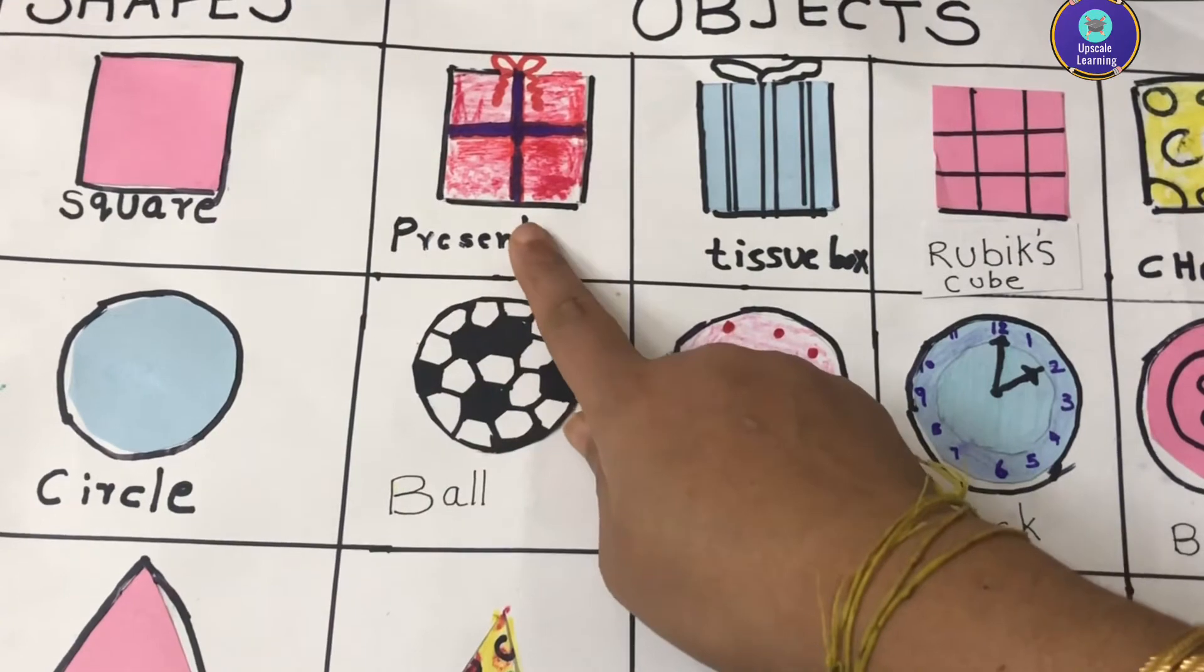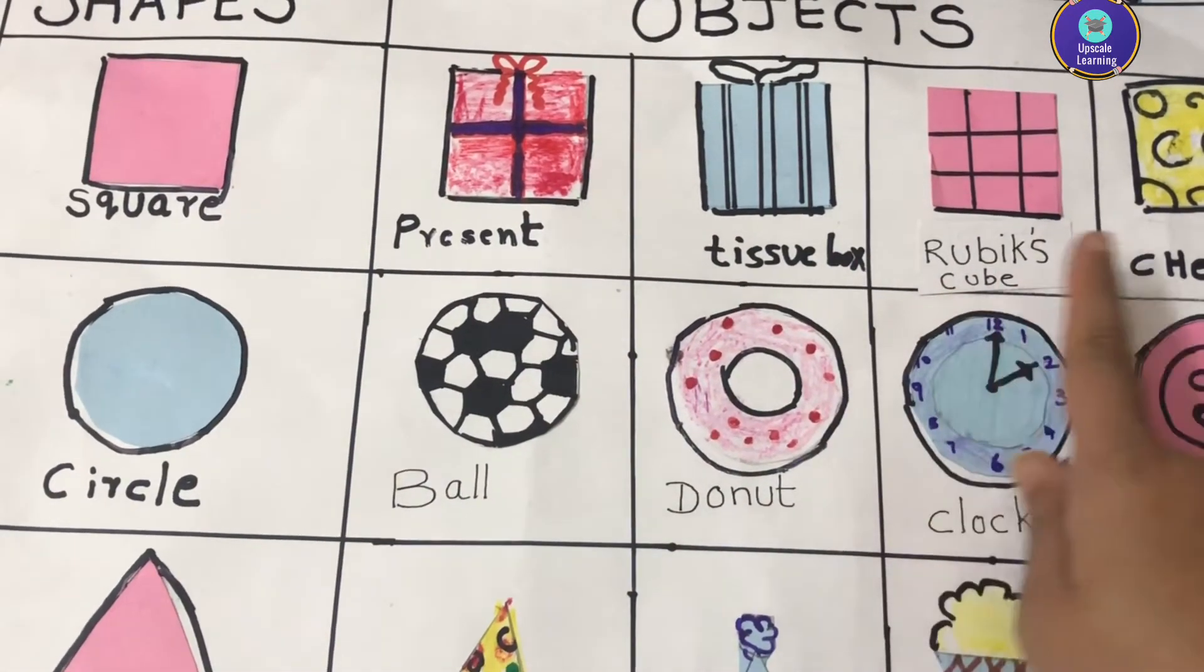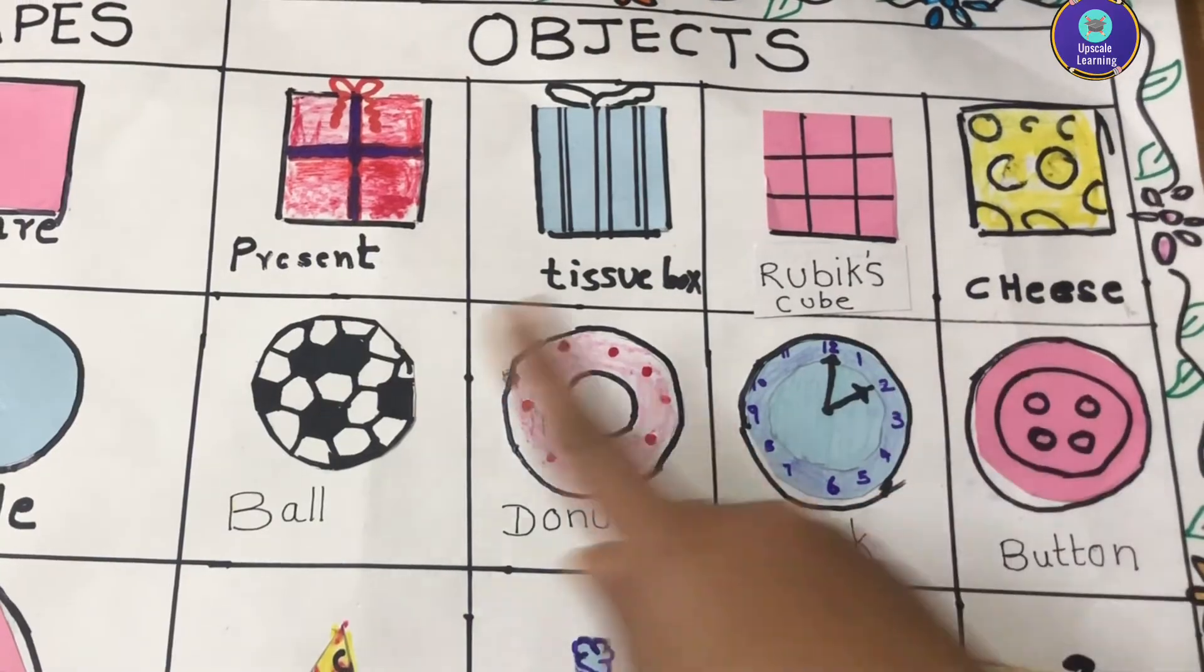Square. Now object and square shape are present: tissue box, rubik's cube and cheese block.